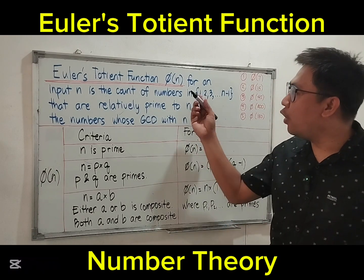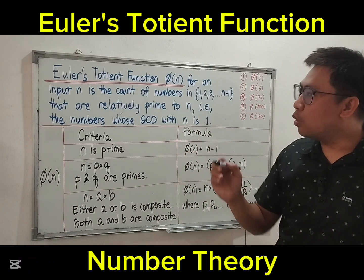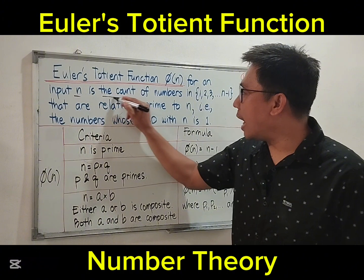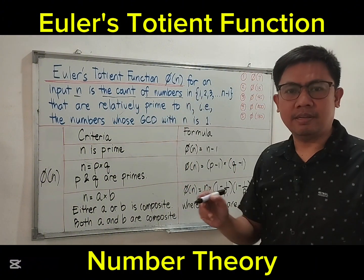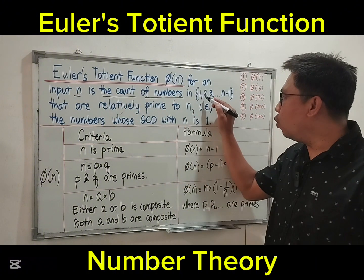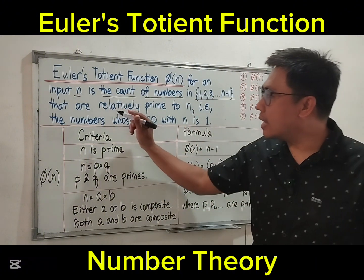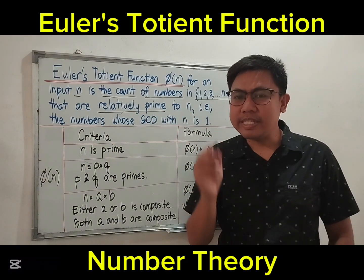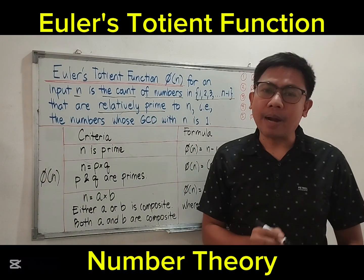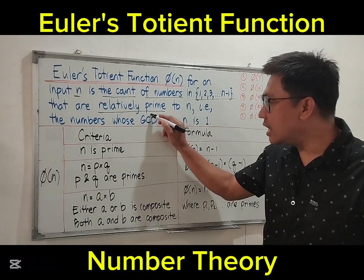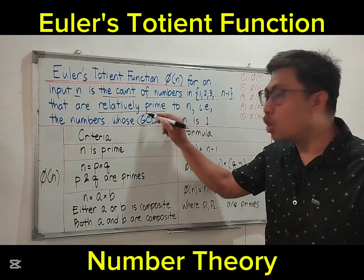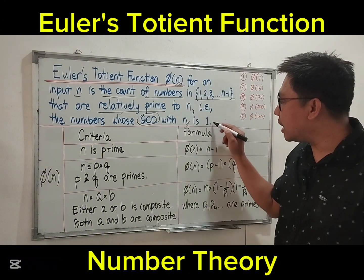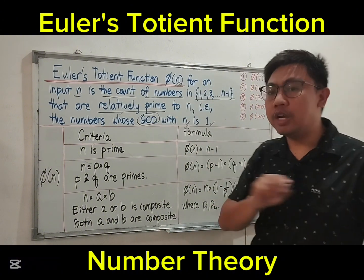That is the definition of Euler's Totient function: the count of numbers in 1 to n minus 1 that are relatively prime. When we say relatively prime, that means the GCD — greatest common divisor — with n is equal to 1.